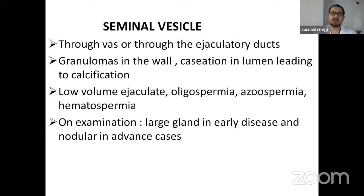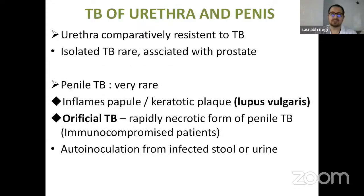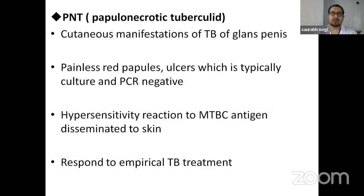On examination, the gland may be hard in early disease and nodular in advanced cases. TB of the urethra and penis: the urethra is comparatively resistant to TB and is usually associated with the prostate. In penile TB, which is very rare, there are inflamed papules and keratotic plaques known as lupus vulgaris. Another form is the ulcerous TB, a rapidly necrotic form usually found in immunocompromised patients, generally from auto-inoculation from infected stool and urine. Papulo-necrotic tubercles are a cutaneous manifestation of TB of the glans penis, with painless red papules that are culture- and PCR-negative, representing a hypersensitivity reaction to Mycobacterium tuberculosis antigen, responding to empirical TB treatment.